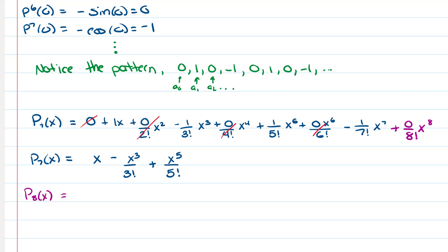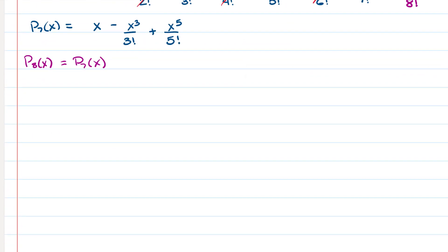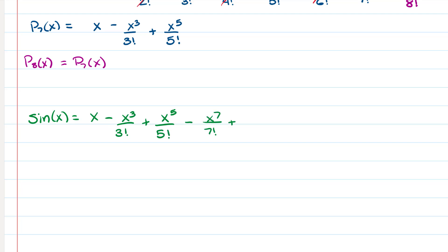To form the Taylor series for sine of x, we just follow that pattern. You can see that every time we add a term, we raise the power of the polynomial by two, and the factorial in the denominator is also raised by two each time.